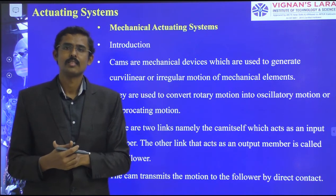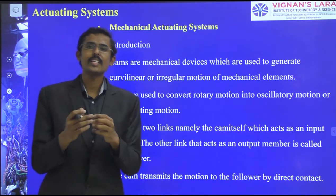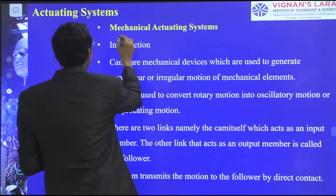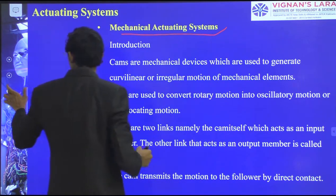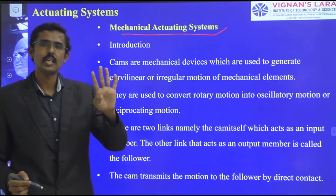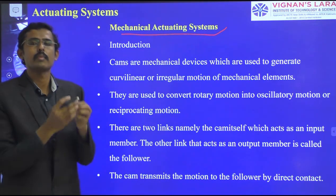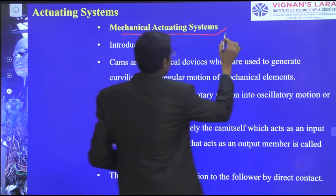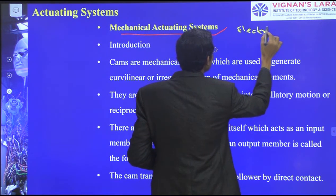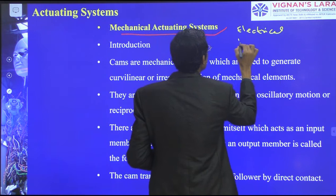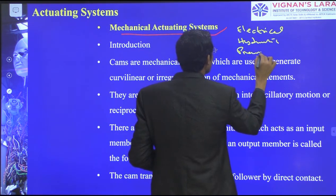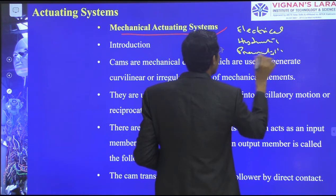Welcome to the session. In today's class, we are going to talk about mechanical actuating systems. In actuating systems, we know there are four simple categories of actuating mechanisms: electrical, hydraulic, pneumatic, and mechanical.